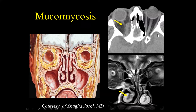Another example: this patient had postseptal cellulitis and was treated overseas with high doses of steroid therapy. This was unfortunately an example of mucormycosis — the black turbinate sign in a patient with mucor. The postseptal cellulitis in this case was due to mucormycosis.